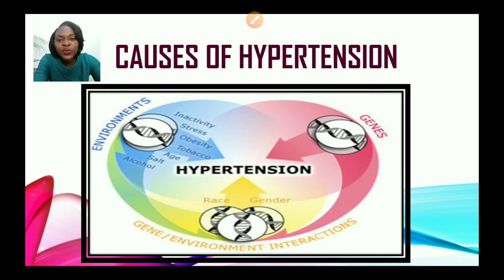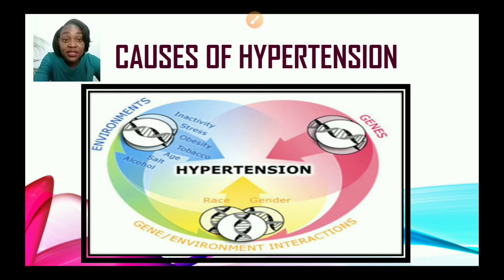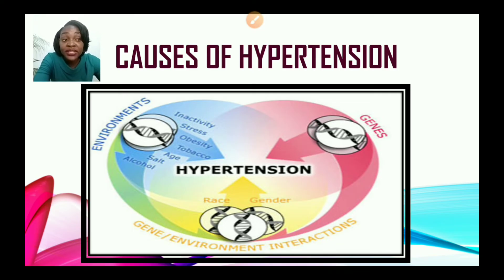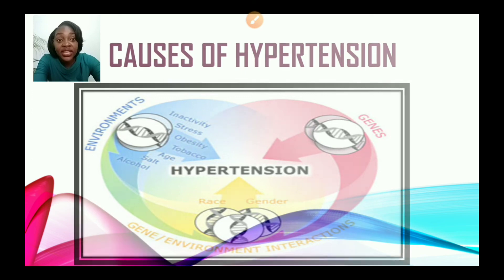Now that we know what hypertension is and its impact on one's body, let us look at the causes in more detail. We speak of environment — is your environment encouraging inactivity? Are you stressed? Are you obese? Do you smoke? Things like salt intake, sodium intake, or alcohol — all of those factors play a role in causing someone to become hypertensive. We also look at genes and race and gender.